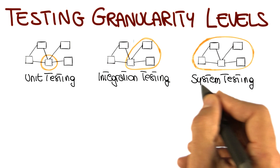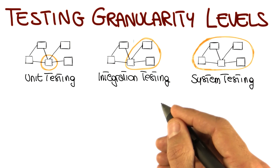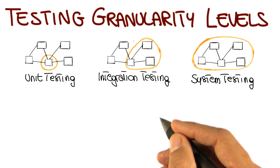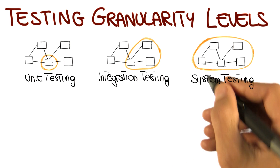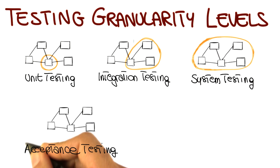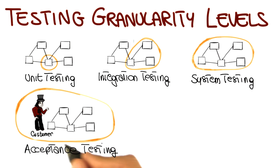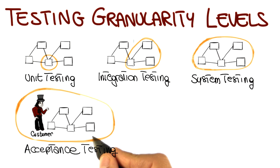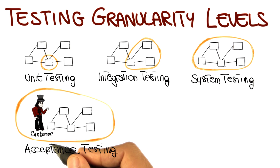In addition to these three basic testing levels, there are two more levels that involve the whole system. The first one is acceptance testing, which is the validation of the software against the customer requirements — the testing that makes sure the system does what the customer wants it to do.